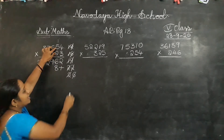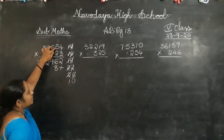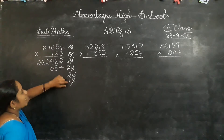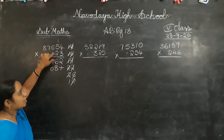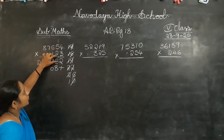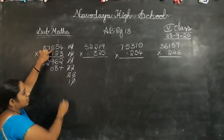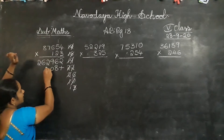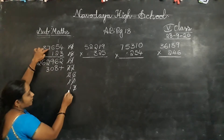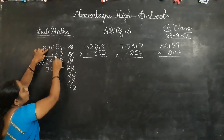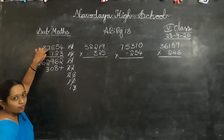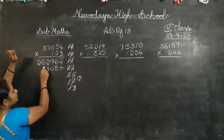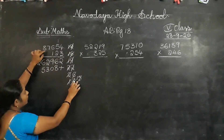2 fives are 10. Again a 2-digit number. So write 0 in the answer place, 1 is carry forward to the next number. 2 sixes are 12. 12 plus 1? 13. So write 3 in the answer place, 1 is carry forward. 2 sevens are 14. 14 plus 1? 15. Write 5 in the answer place, 1 is carry forward.